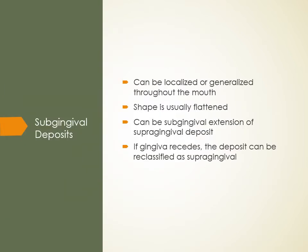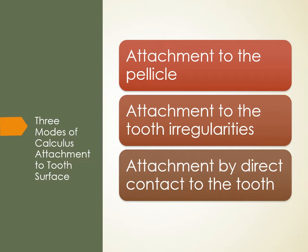Subgingival calculus can be localized or generalized throughout the mouth. The shape is usually flattened when small, then slowly forms a spur shape over time. It can be a subgingival extension of a supragingival deposit, and if the gingiva recedes, the deposit gets reclassified as supragingival calculus. The difference between supra and sub is simply where the gingival margin is. The three modes of calculus attachment are: attachment to the pellicle, attachment to tooth irregularities, or direct attachment to the tooth.